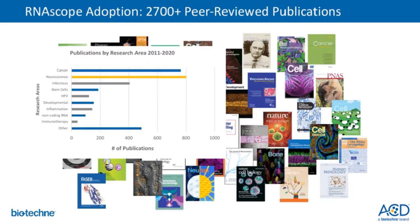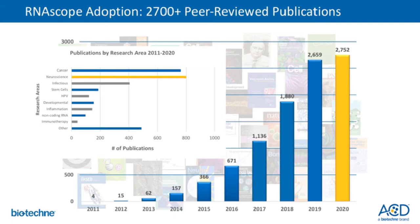The growth and adoption of RNA Scope technology is best exemplified by the number of peer-reviewed publications. We had our first publication in 2011, and since then there have been over 2,700 peer-reviewed papers published using the RNA Scope technology in numerous journals, including many top-tier ones. The RNA Scope technology is highly relevant across multiple fields, with top areas being neuroscience, cancer, and infectious diseases. A list of papers using RNA Scope in infectious disease research is available on our website.